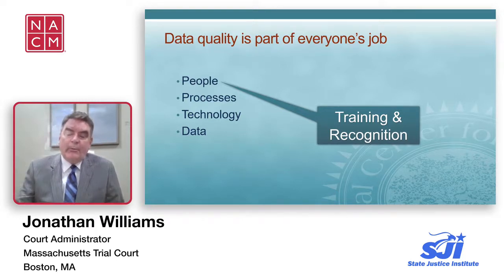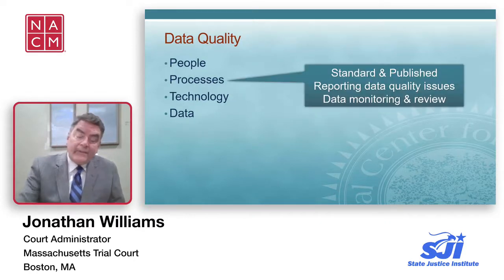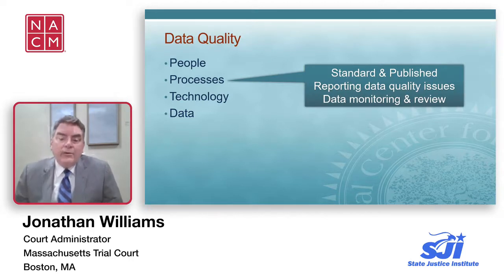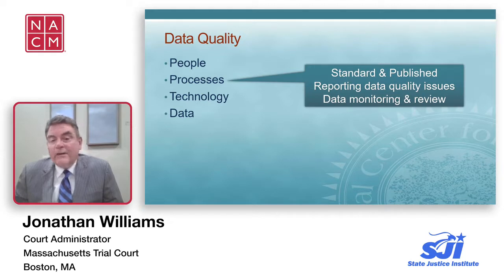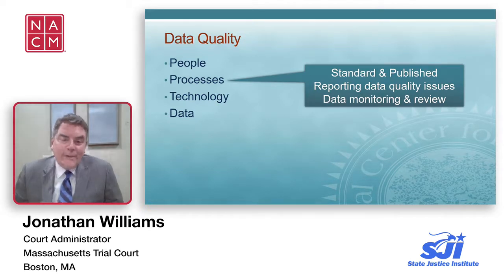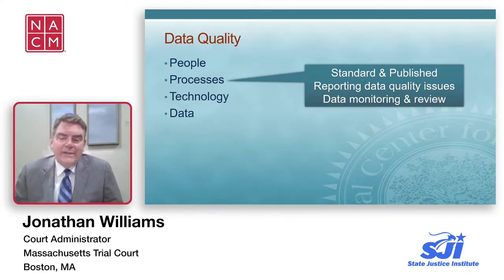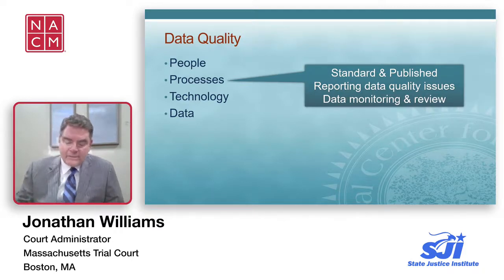It's not until you begin to aggregate data from different locations that you realize you have a real definition drift, because staff at different places understand terminology to mean different things. It may be that one court uses a certain word for a type of disposition, while a few miles away another court uses a different term for the exact same disposition — neither one is wrong in itself, but it's a huge problem in data governance if you don't reconcile those differences and settle on one variety. Your definitions of terms need to be standardized, published, and you should have a data dictionary. You need to come up with a way to audit and report data quality issues.